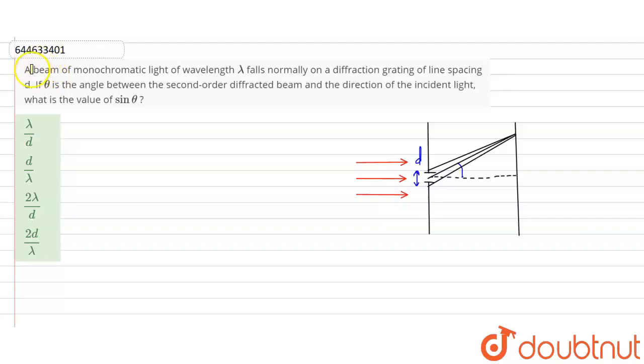Hello students, welcome to Doubtnet. Our question is: a beam of monochromatic light of wavelength lambda falls normally on a diffraction grating of line spacing d. If theta is the angle between second order diffracted beam and the direction of incident light, what is the value of sin theta?